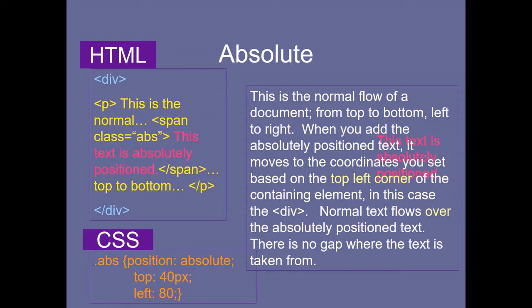For absolute positioning: the normal flow goes top to bottom. When you add an element with absolute position, it moves to the coordinates you set based on the top-left corner of the containing element. Whatever margin, padding, or position values you give are fixed relative to that left-corner position. Any other text will overflow around it. The position is fixed and does not change.